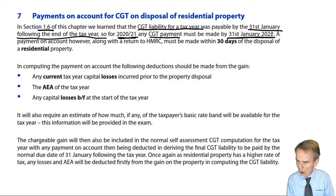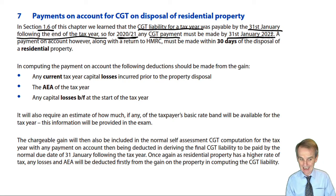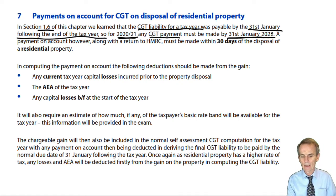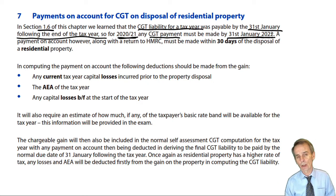That's a long delay between selling the asset, making the gain, getting the proceeds and the cash in your pocket from that sale. Selling on the 1st of May 2020, you wouldn't have to pay your CGT until the 31st of January 2022. It was felt that was far too generous when it came to disposals of residential property.